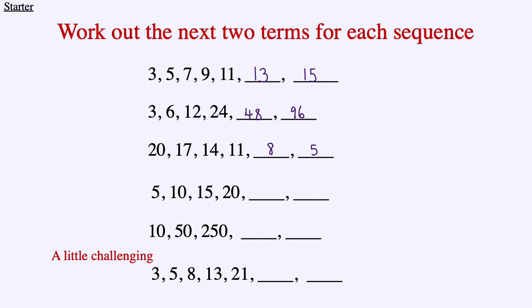For the fourth sequence we have 5, 10, 15, 20 — we're adding 5 each time, or we could say it's the 5 times table — so we get 25 and then 30. For the fifth sequence we have 10, 50, 250 — each time we're multiplying by 5: 250 times 5 is 1,250, and then 1,250 times 5 gives us 6,250.